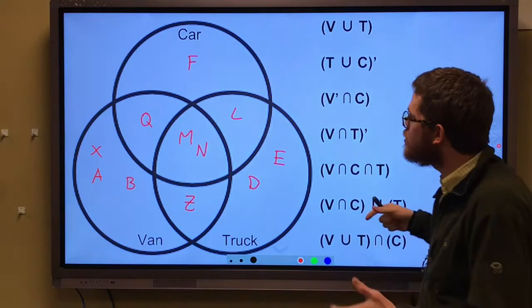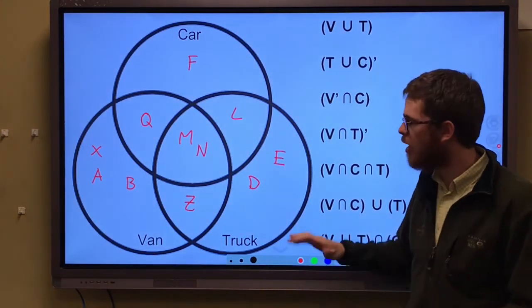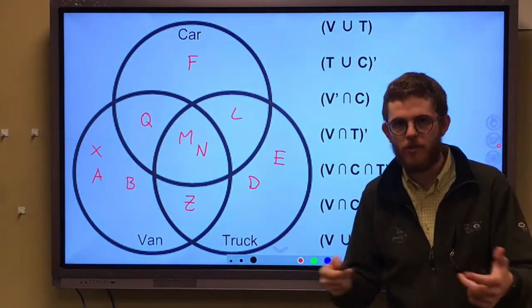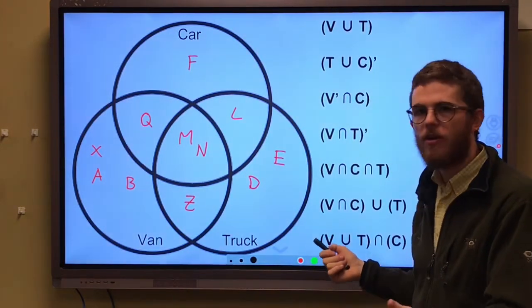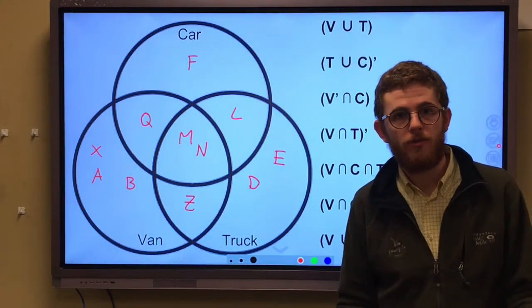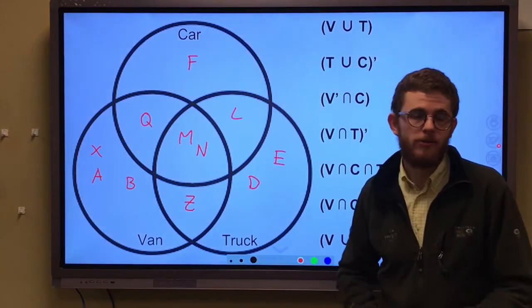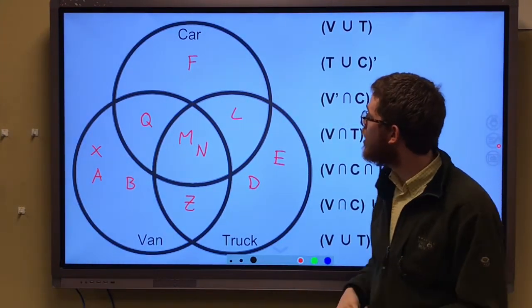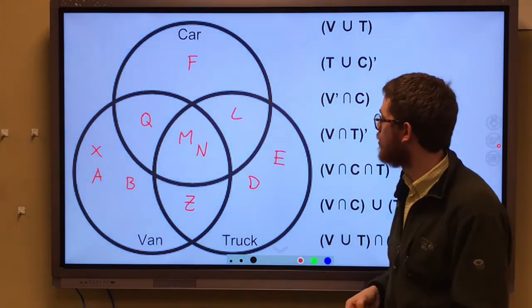Again we're looking at Venn diagrams. The situation: students who have been assigned a letter to represent their name are polled as to what kind of vehicles are in their driveway. So like F, let's just say Frank. In his driveway there's only cars, they only have cars in his driveway.